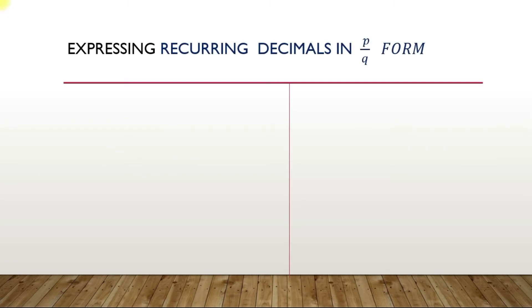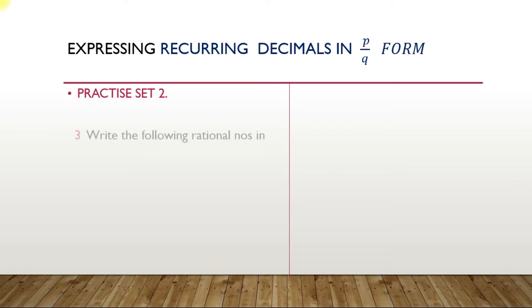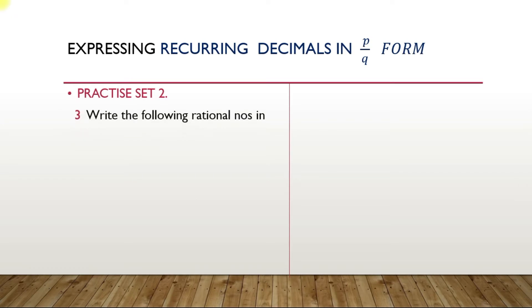Now, today we are going to express recurring decimals in P upon Q form. Last time you had done P upon Q to recurring; now you are going to express recurring decimals in P upon Q form. So let us take Practice Set 2.1, sum number 3: write the following rational numbers in P upon Q form.